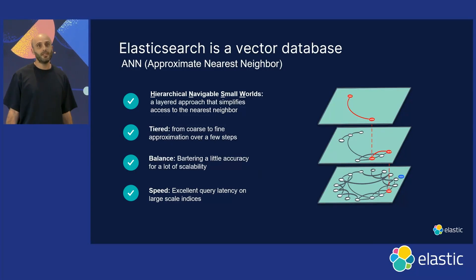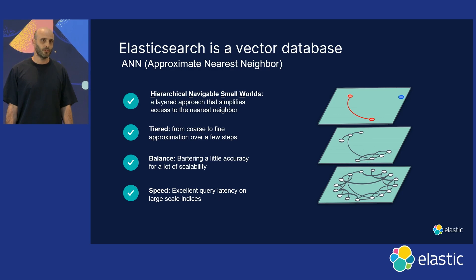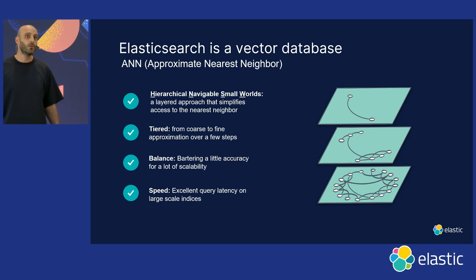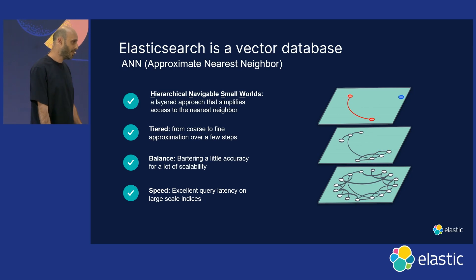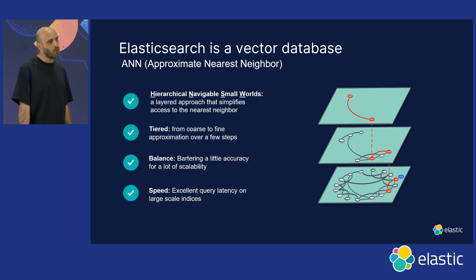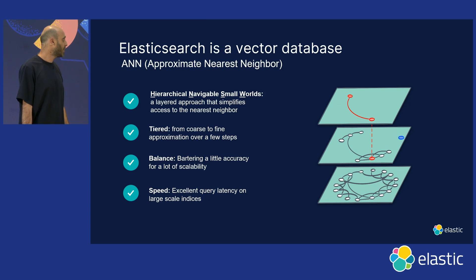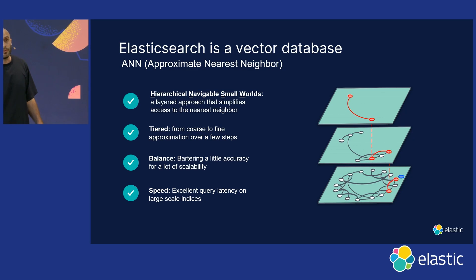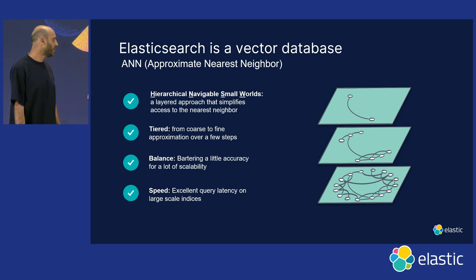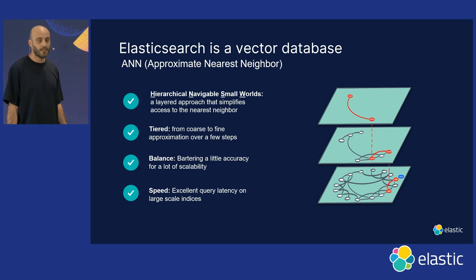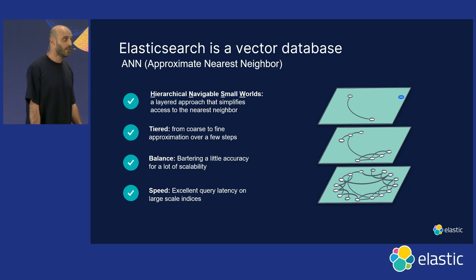To make Elasticsearch a vector database, it all starts with a new capability — and like every new capability in Elasticsearch and by extension in Lucene, the library we use for search, it all starts with the data structure. The data structure we introduce is called the Hierarchical Navigable Small World Graph. The hierarchical aspect of this data structure makes searching for the nearest neighbor much more efficient.